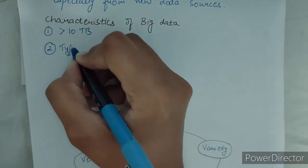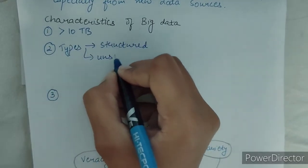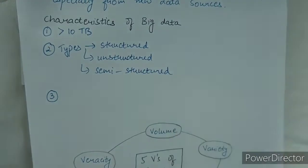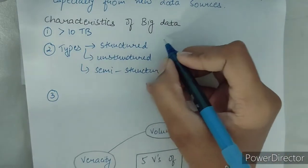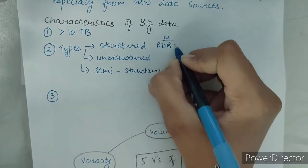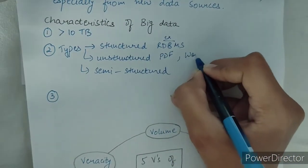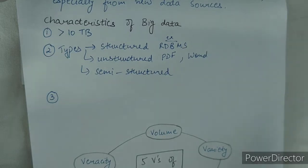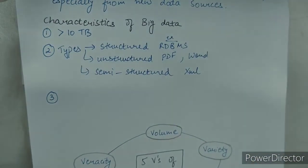There are many types of big data: structured, unstructured, and semi-structured. Structured data is also known as data in proper tables in a proper format. An example of structured data is RDBMS. Unstructured data means it is not in a proper format — like PDF or Word files. Semi-structured means it is not in a particular format or conventional way; for example, XML files.